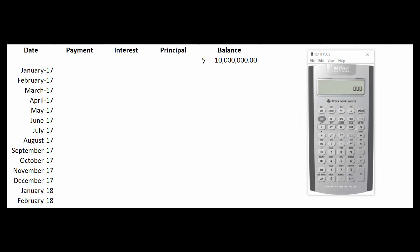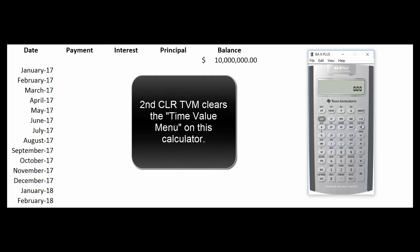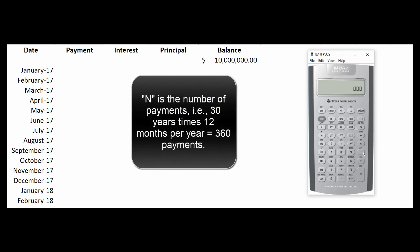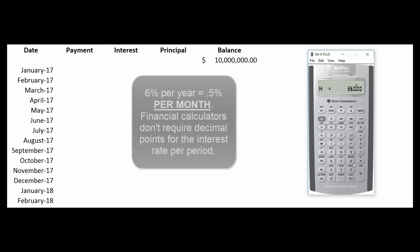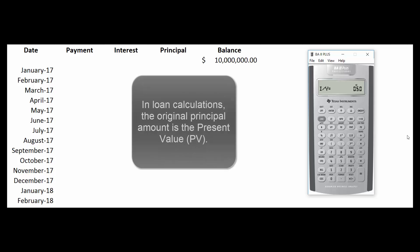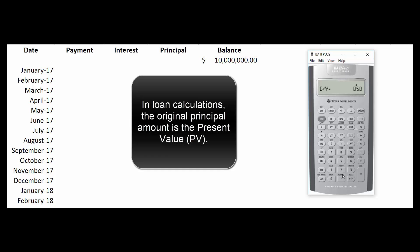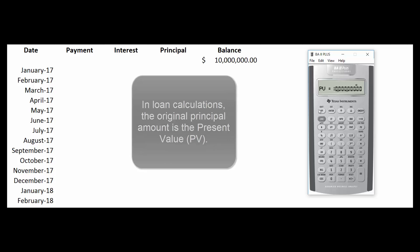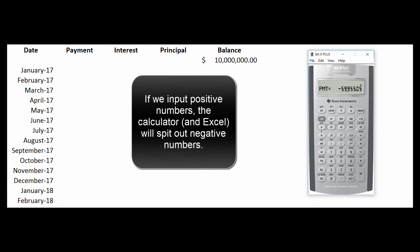There are several different ways to figure out what that mortgage payment is. If you have a financial calculator, you would be in the third row, so you'd hit second, TVM, and clear the TVM — that clears the time value menu. It's a 30-year mortgage, so that would be 360 monthly payments: 30 years times 12 months per year. We said it was a 6% mortgage, so we do 6 divided by 12 to get our monthly interest rate. We said we're going to borrow $10 million, so we plug that in as the present value and then compute the payment. It tells us the payment is $59,955.05.